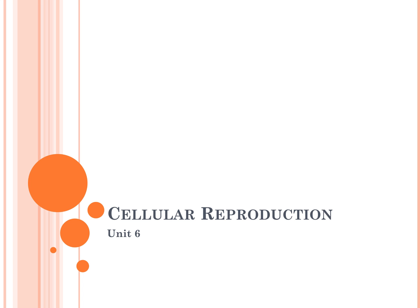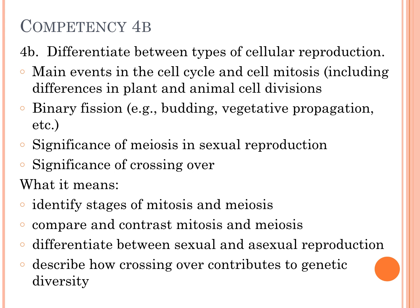This unit is Unit 6 on cellular reproduction. Welcome to nine weeks. This is Department of Education Competency 4b, which states we're going to differentiate between types of cellular reproduction — in simpler terms: identify stages of mitosis and meiosis, compare and contrast mitosis and meiosis, and differentiate between sexual and asexual reproduction. We're also going to describe how crossing over contributes to genetic diversity.